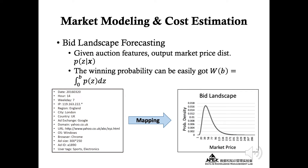Given the auction feature X, the goal of this work is to estimate the distribution of market price variable Z, and the corresponding winning probability function W of bidding at price T can be derived through integral operation over the market price. This is usually defined as bid landscape forecasting in real-time bidding.